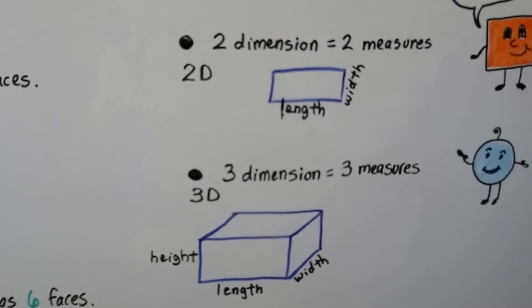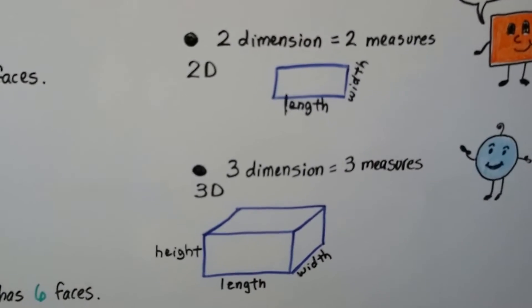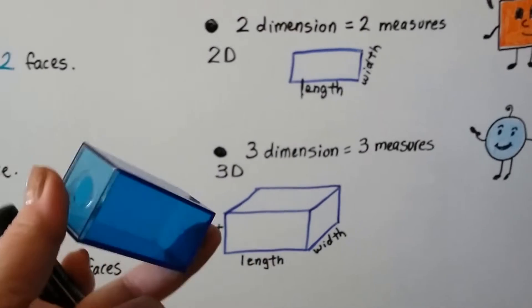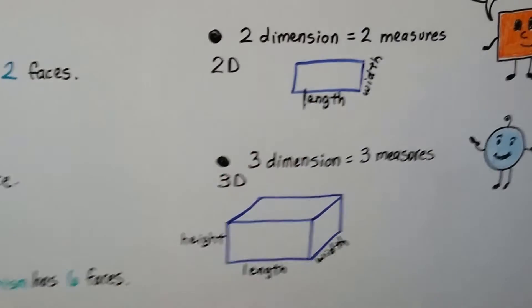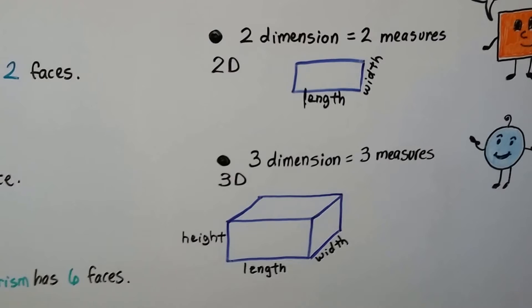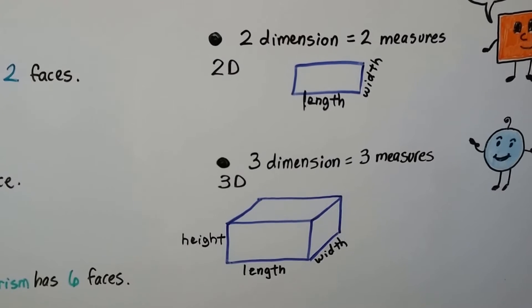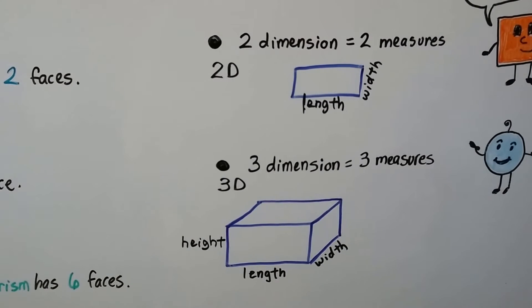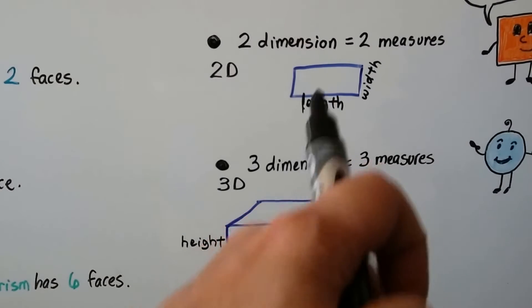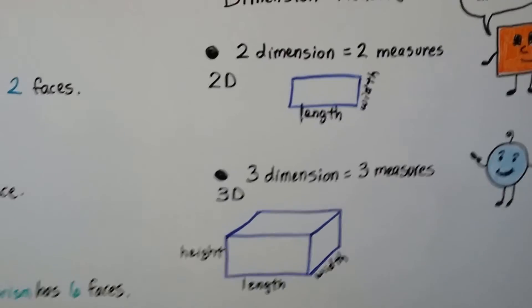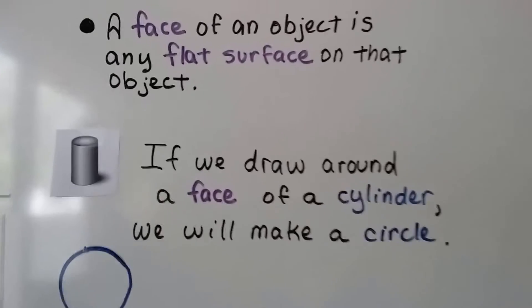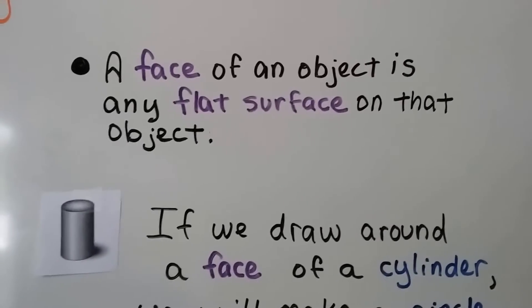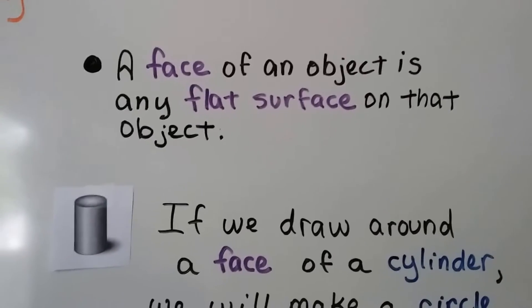These lessons are calling these space shapes, which is really a 3D shape, and they're calling the flat ones plane shapes, which are 2D shapes. It means the same thing, because that's on a flat plane. A face of an object is any flat surface on that object.